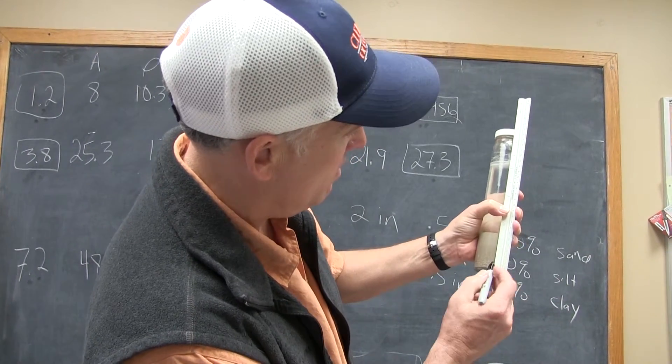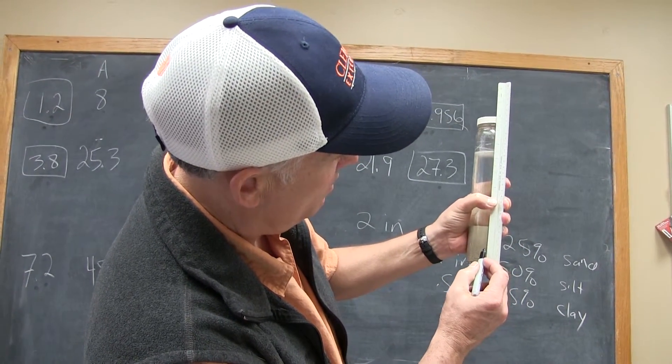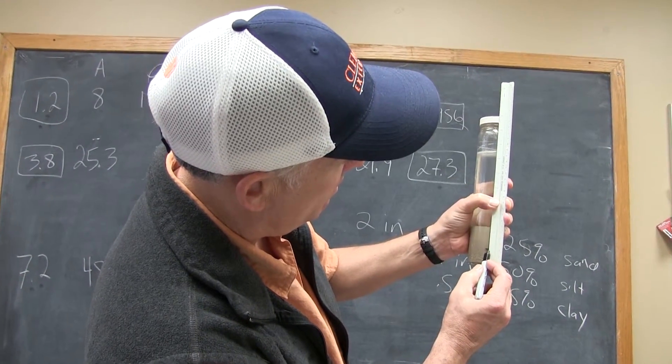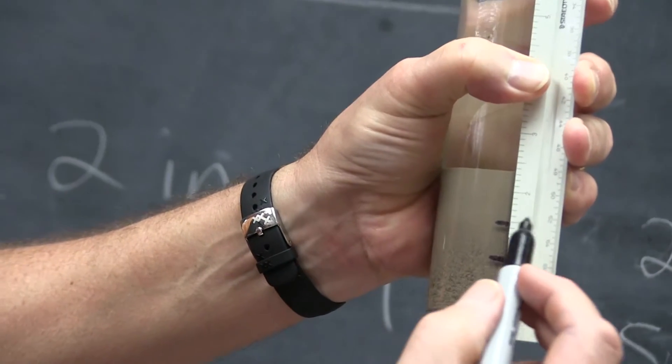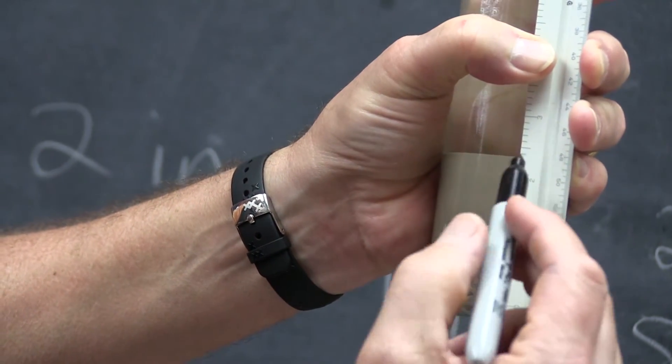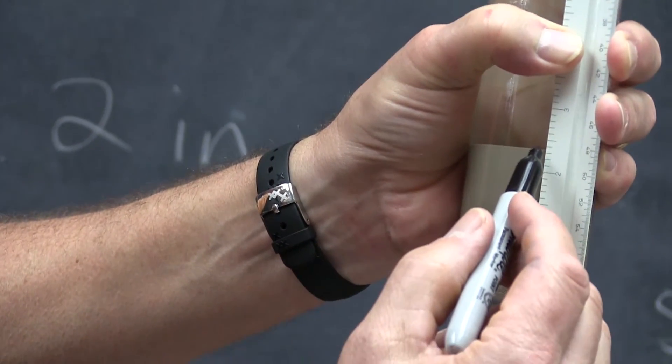Use a ruler to estimate the percentage of the settled material that is sand, silt, and clay. The percentages you observe are a good estimate of the amounts of sand, silt, and clay present in your rain garden site.